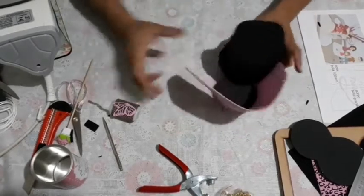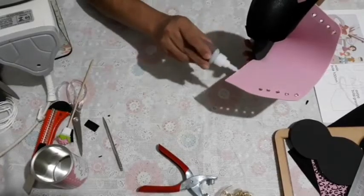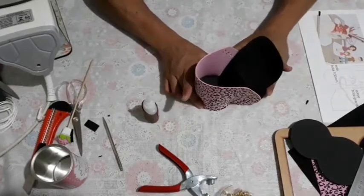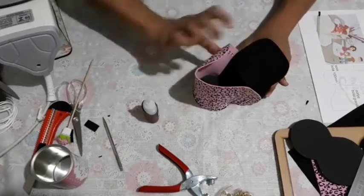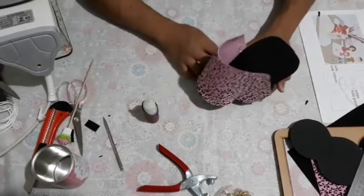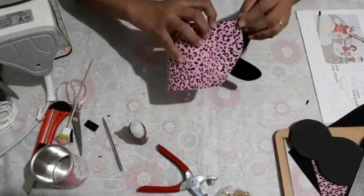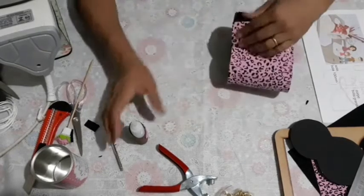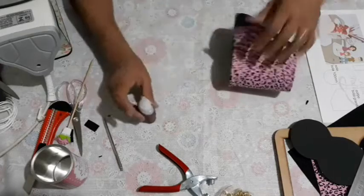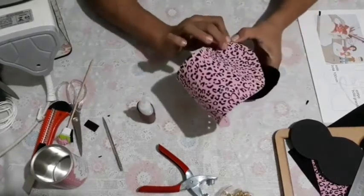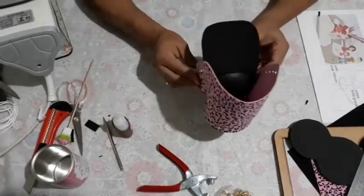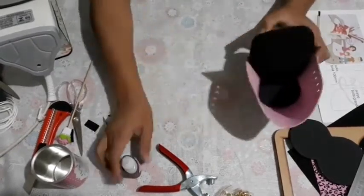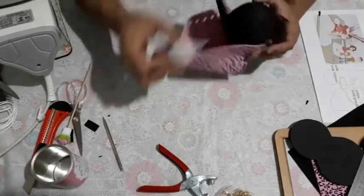Já colei do lado. Agora aqui do outro lado. Segura um pouco. Colou aqui. Segura aqui pra colar bem. Colou. Aqui ficou, põe mais um pouquinho de cola aqui. Segura. A gente fez isso aqui. A gente pode passar um pouquinho de cola aqui, vou fechar um pouquinho aqui dos lados.